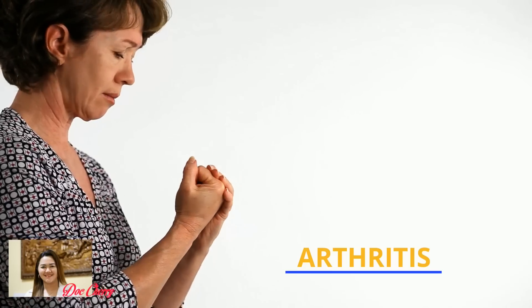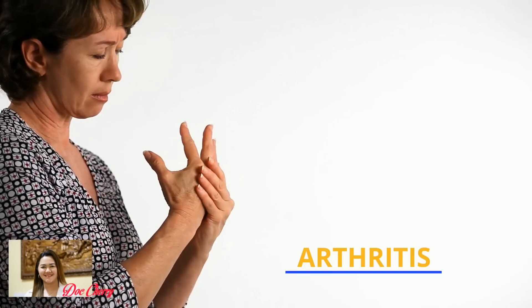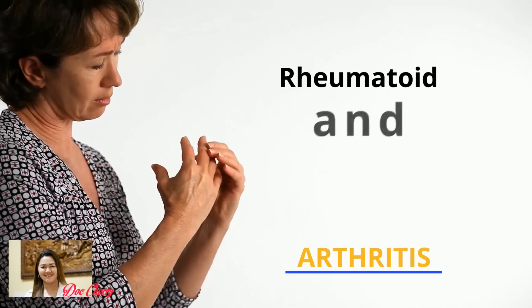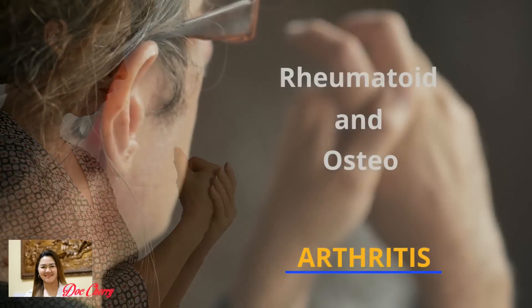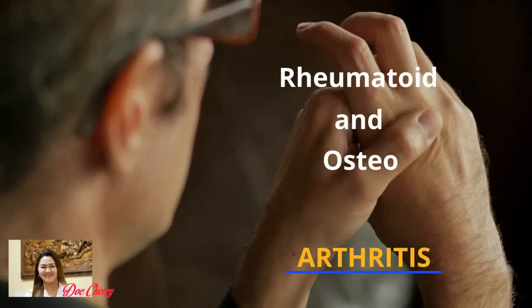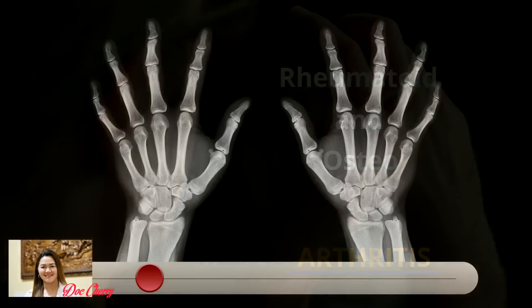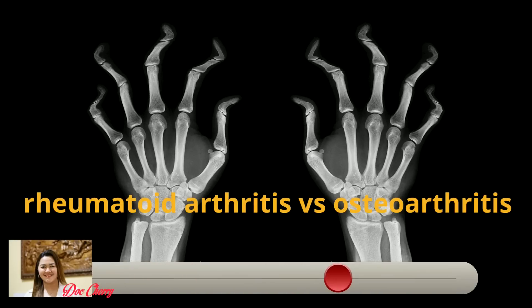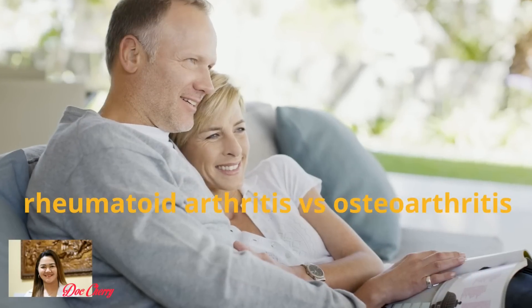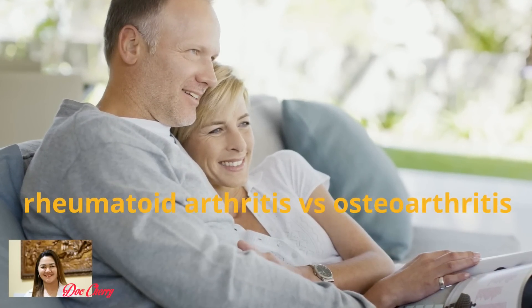When you hear the word arthritis, it is actually an umbrella term used to describe an affectation of your joints. What you might not be aware of is the fact that there are many forms of arthritis, and rheumatoid and osteoarthritis are only the most common forms, and they are often termed interchangeably. But you need to be educated on how to differentiate one from the other, because only when you understand the condition can you manage your symptoms more effectively.